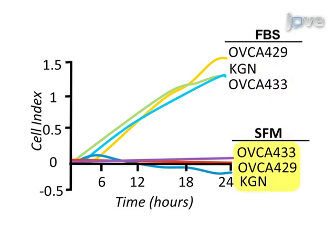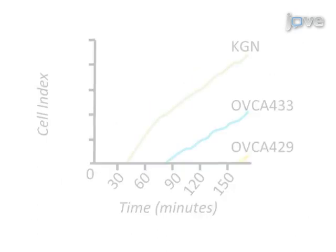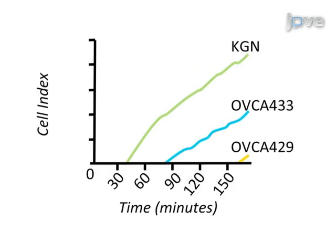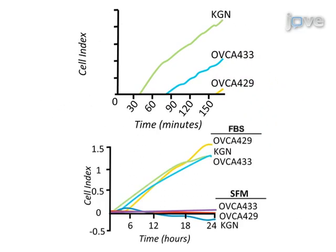In contrast, basal levels of invasion of all cell lines were low. The cell lines exhibited differences in their times to onset of invasion, as shown by a more detailed analysis over a 2.5-hour period. The KGN cells invade cell and matrix barriers quickly, while OVCA 433 and OVCA 429 cells take three and five times longer to invade respectively. Importantly, behaviors at the onset of invasion were not predictive of overall invasion capacity, suggesting different inherent capabilities and that different factors may regulate early and late invasive behaviors of spheroids.